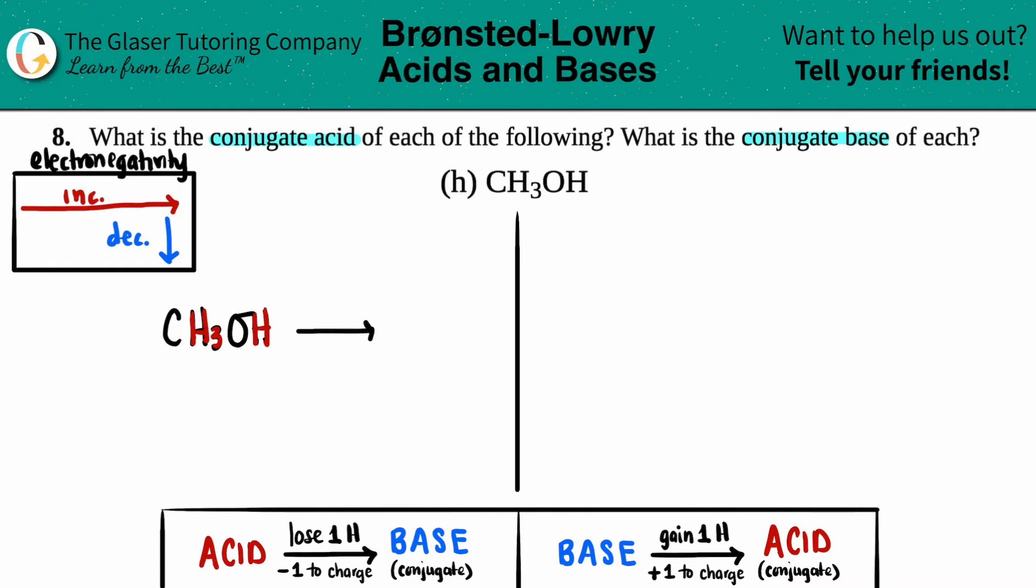Now, the hydrogen that is going to get lost, aka the most acidic hydrogen, is always attached to the more electronegative element. So basically we just have to find out which element is the more electronegative. These hydrogens are connected to this carbon and this hydrogen is connected to the oxygen.